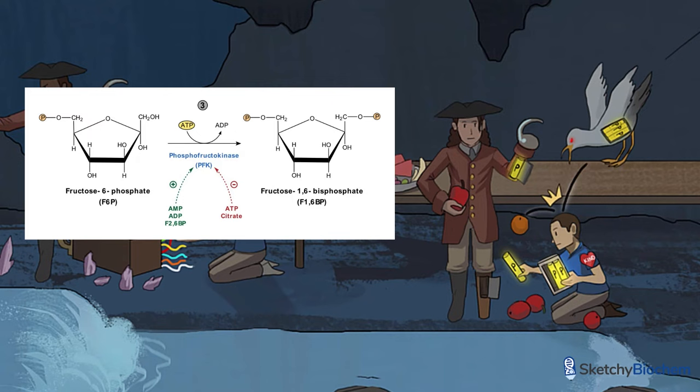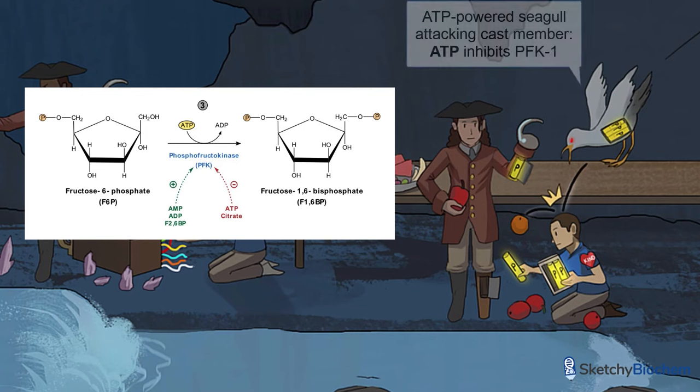If we have enough ATP already, why would we want to make pyruvate and NADH that ultimately result in a lot of ATP? Therefore, when ATP levels are high, it inhibits PFK1 and slows glycolysis until the ATP supply decreases. One very angry ATP robo-seagull attacking with citrus fruit is a great visual inhibitor of PFK1.